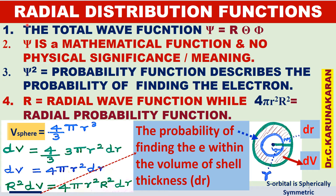Here we can say radial probability function, or radial distribution function, or radial density functions — they all mean the same thing. This function is obtained from the radial wave function.